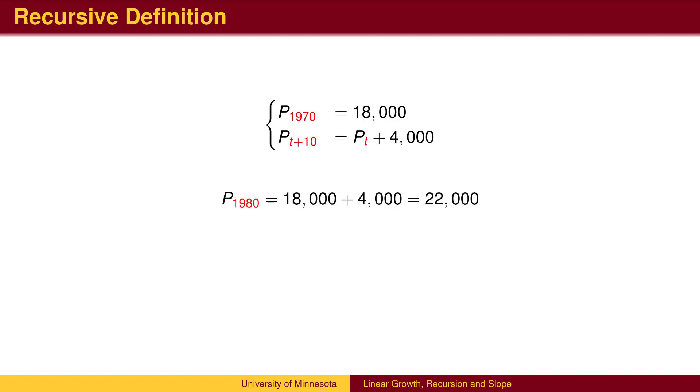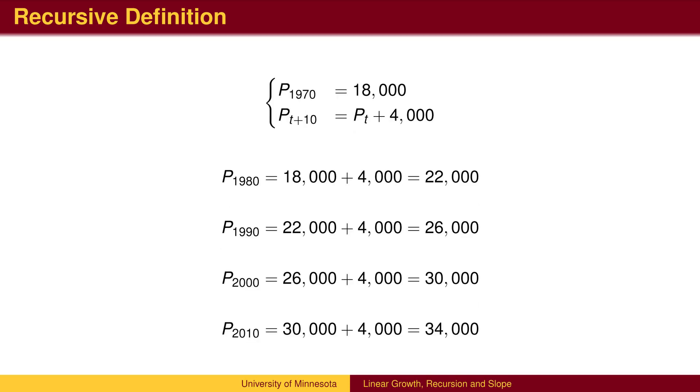For example, inserting t equals 1970, we can calculate the 1980 population by adding 4000 to the 1970 population. We can then use the 1980 population to find the 1990 population, and continue to find the 2000 population, and the 2010 population.